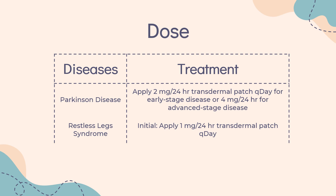Dosing for Parkinson's disease — Initial: Apply a 2 mg per 24 hours transdermal patch once daily for early-stage disease, or 4 mg per 24 hours for advanced-stage disease. May be increased as needed by increments of 2 mg per 24 hours at weekly intervals. Not to exceed 6 mg per 24 hours for early-stage disease or 8 mg per 24 hours for advanced-stage disease. To discontinue, reduce dose gradually no faster than 2 mg per 24 hours every other day until completely withdrawn.